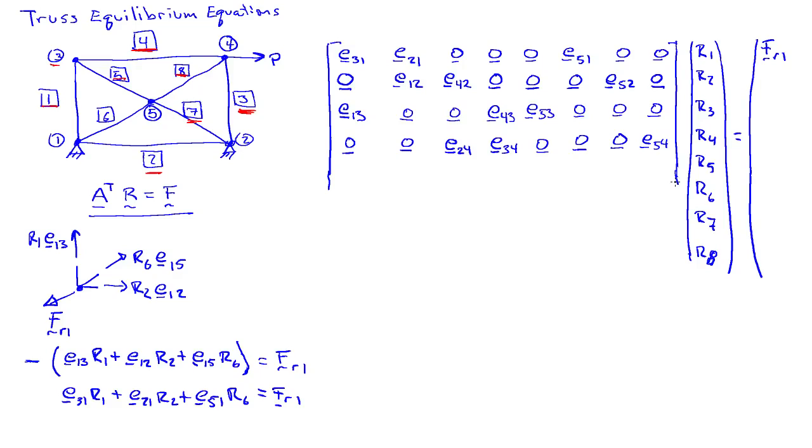If we go to node 5 for its equilibrium equation, it's sitting right here and it involves bars 5, 6, 7, and 8. The last four columns are going to have non-zero entries. We'll have 0, 0, 0, 0, and now we'll have E35 for bar 5. Bar 6 connects to node 1, so that'll be E15. Bar 7 connects to node 2, so E25. Bar 8 connects to node 4, so E45.